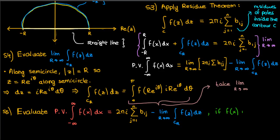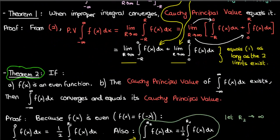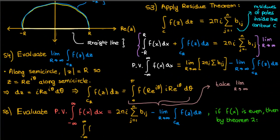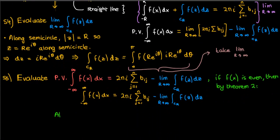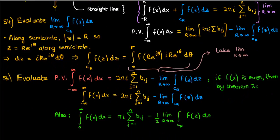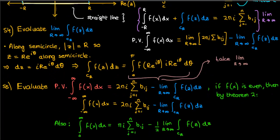Once we're done with step 4 and have found all the residues, we can find the principal value of the improper integral using the equation we wrote down — the limit on the residues is dropped since the residues don't depend on capital R. Now if f of x is an even function, we can replace the principal value by the improper integral itself, according to the second theorem proved above. This allows us to find the improper integral of f of x over an infinite interval. If we wanted the improper integral over a semi-infinite interval, we would just use the corresponding equation. For a function that isn't even, we would need to verify that its improper integral converges over our infinite or semi-infinite interval.